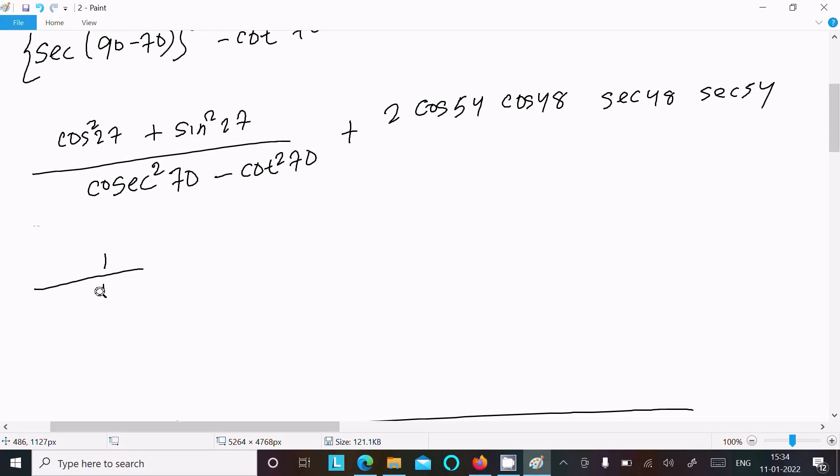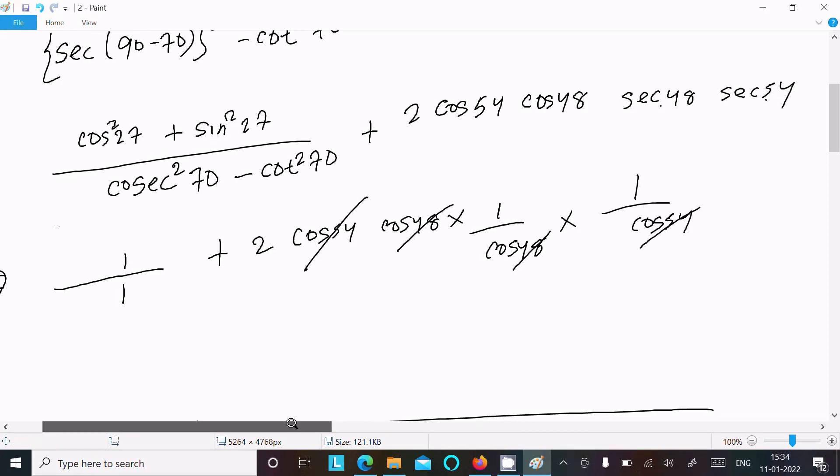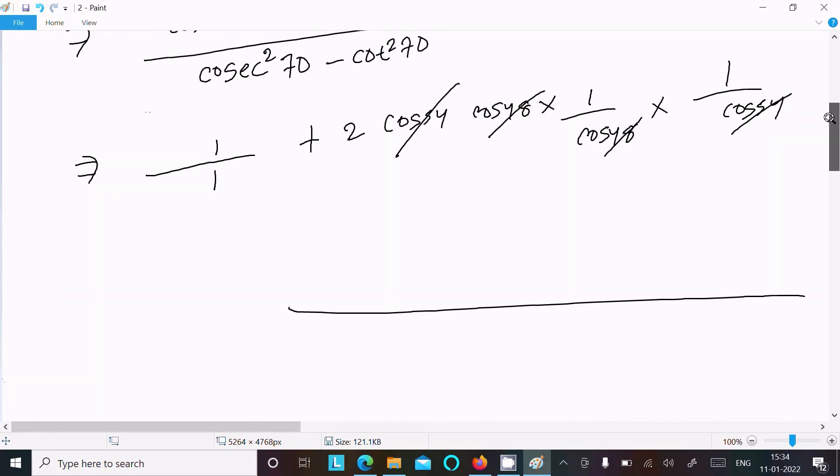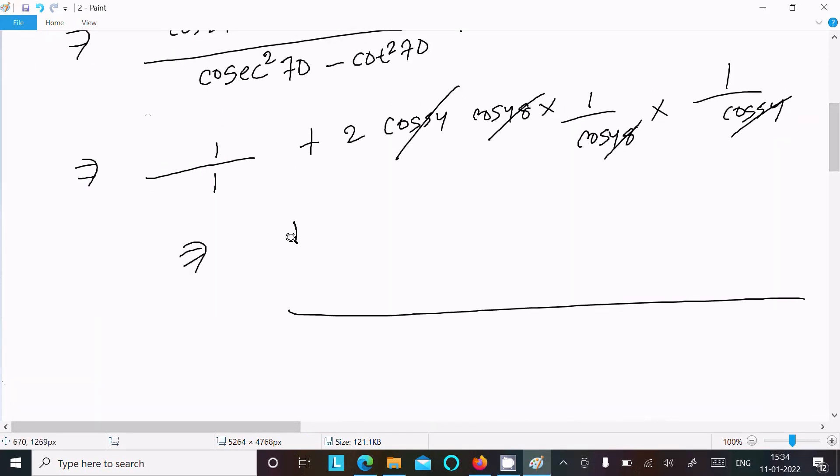Now plus 2, so cos 54 cos 48. This we can write sec as 1 by cos 48, and this we can write 1 by cos 54. This cancel, that cancel. And after doing the calculation, now you can get here 1 by 1 that is 1. Here 2, 1 into 1 that is 2. So 1 plus 2 that is equal to 3.